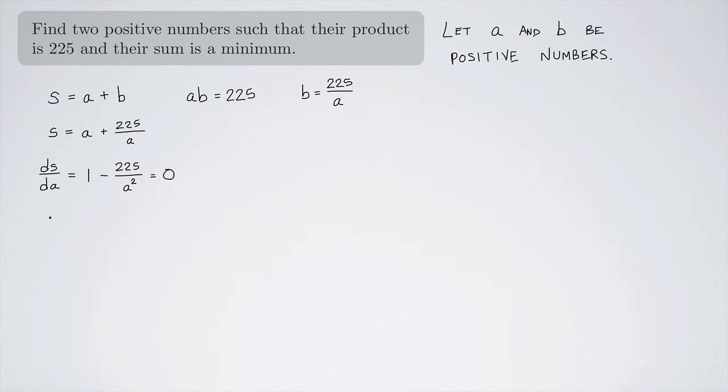So if I do that, then I can say that 225 divided by A squared must equal 1. And that's the same thing as saying that A squared must equal 225.